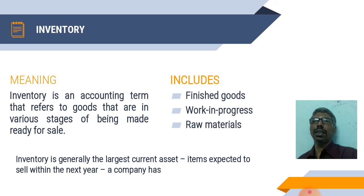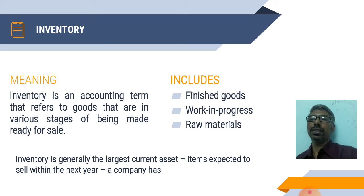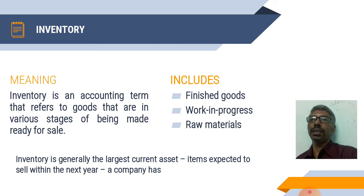What is inventory? Inventory is an accounting term. It is related to any type of goods used in business firms in the nature of ready to sale. It may be in the form of raw material, work in progress — that is intermediate products — or finished goods.